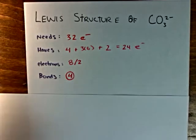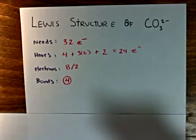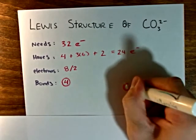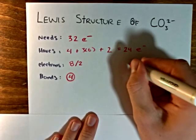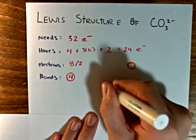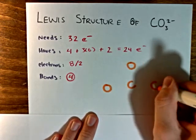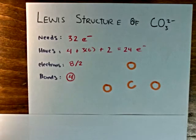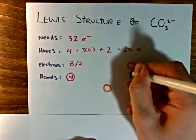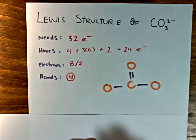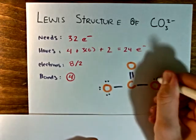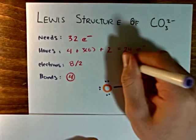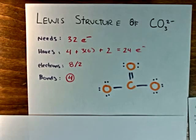Now when we draw this structure, the carbon atom will be in the center, surrounded by the 3 oxygen atoms. And then we write in our 4 bonds. And then we add electrons in order for each atom to have a full valence. And that will be our Lewis structure for the carbonate anion.